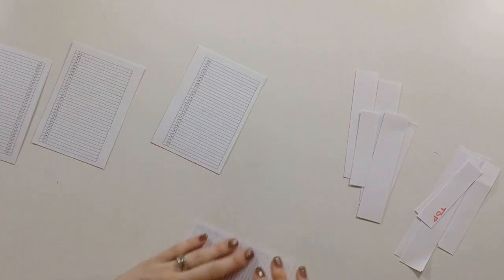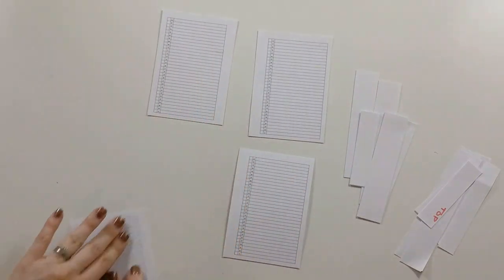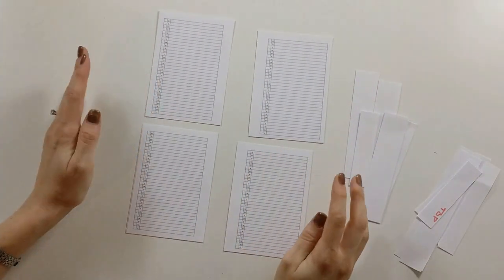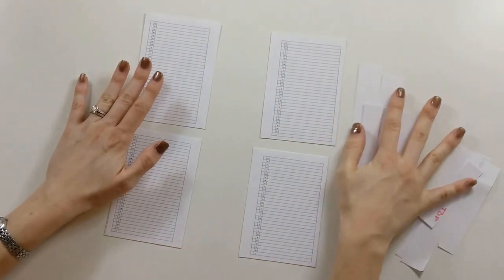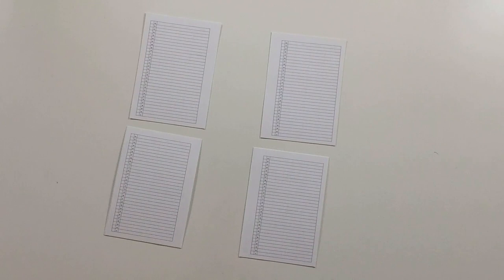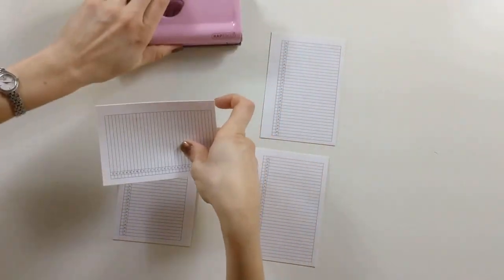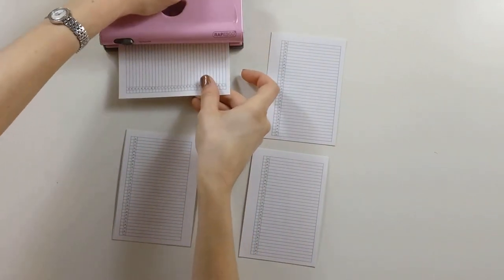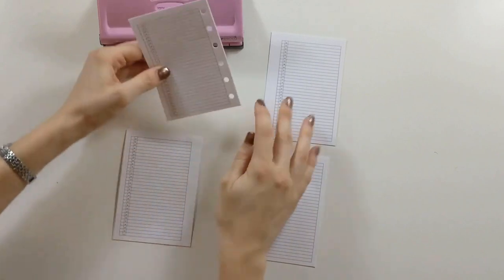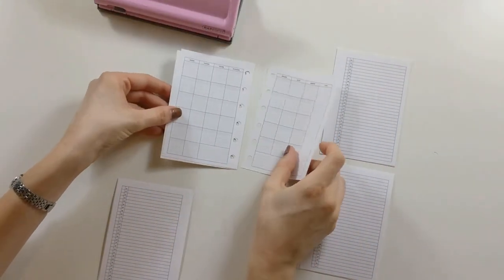So you may notice something here, that these are on the left side and these are on the right side, not of the frame I mean of the planner. This may make more sense once I punch them. So because we printed the entire calendar twice, for example, because the calendars on both sides of the page, here you have the full calendar.